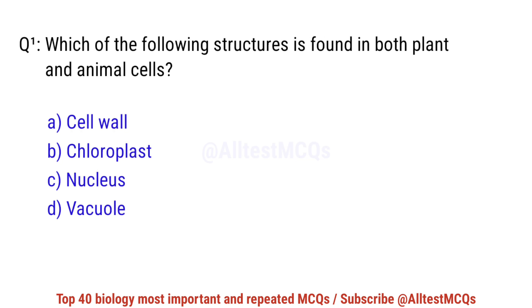Question number 1. Which of the following structures is found in both plant and animal cells? The right option is C: Nucleus.